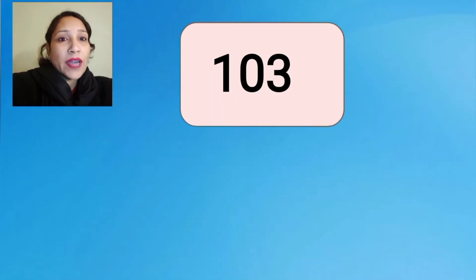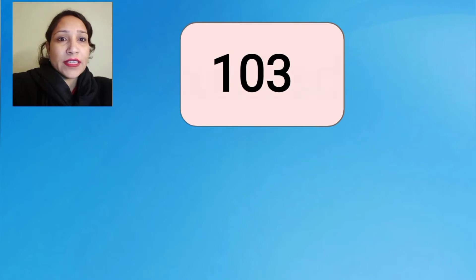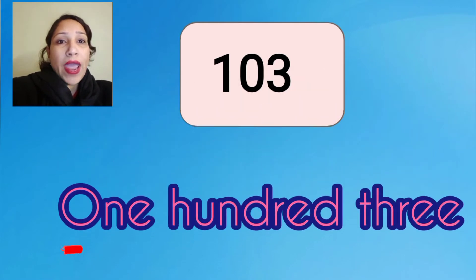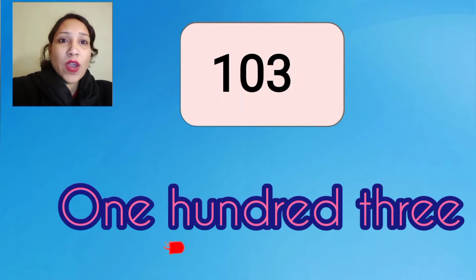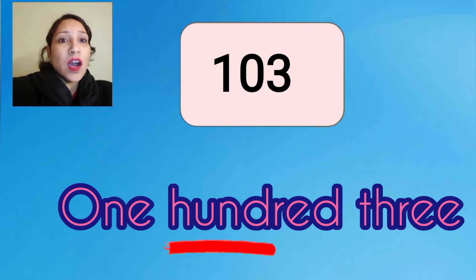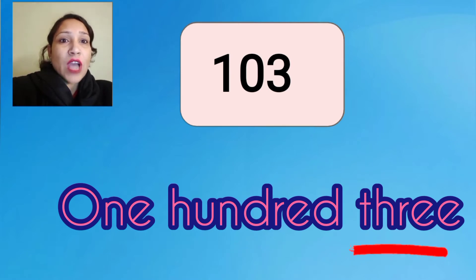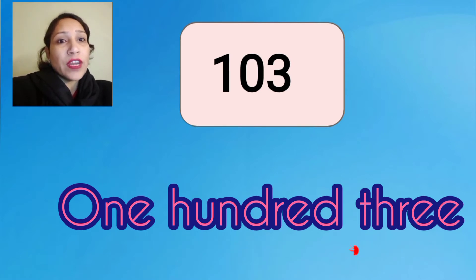The next number is 103. The spelling of 103 is O-N-E, one; H-U-N-D-R-E-D, hundred; T-H-R-E-E, three. 103: one hundred three.